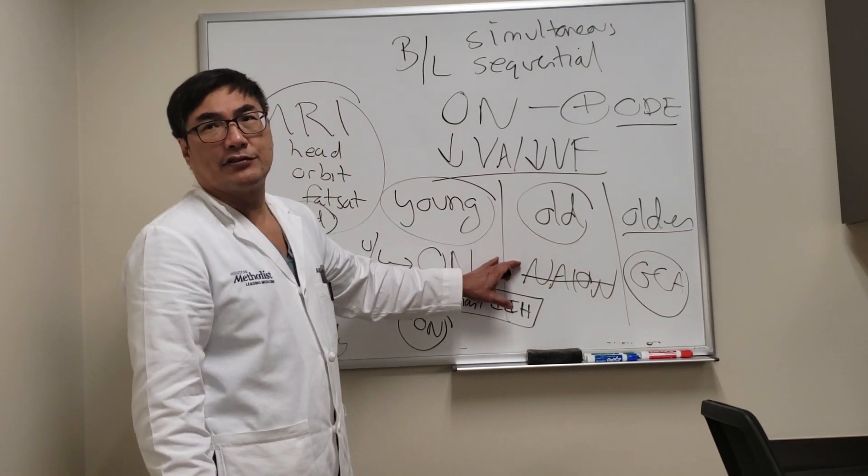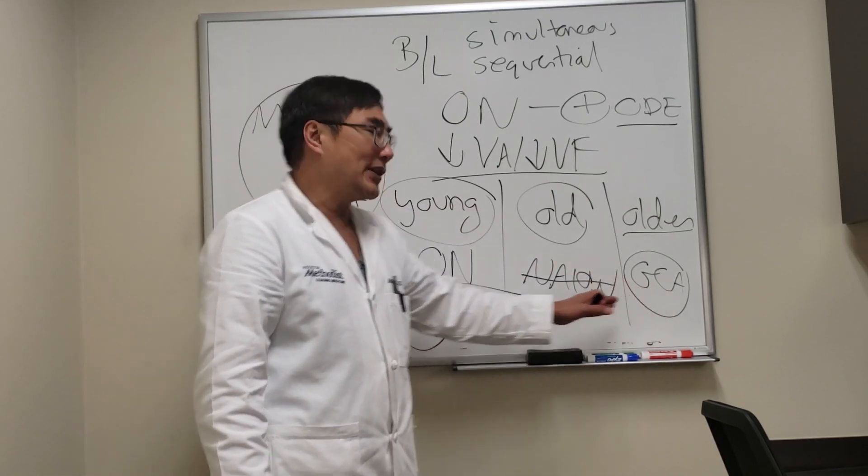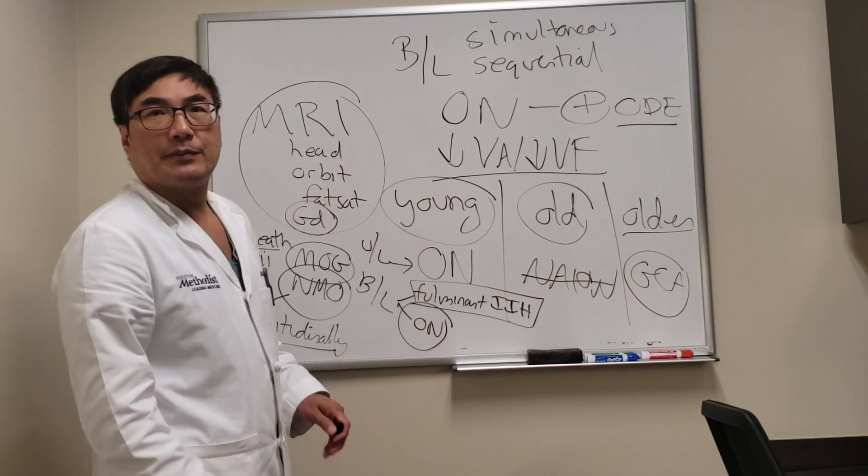NAION is going to be a diagnosis of exclusion. You can look for the enhancement, do a temporal artery biopsy in an older patient, and test for the usual suspects in the young patient.